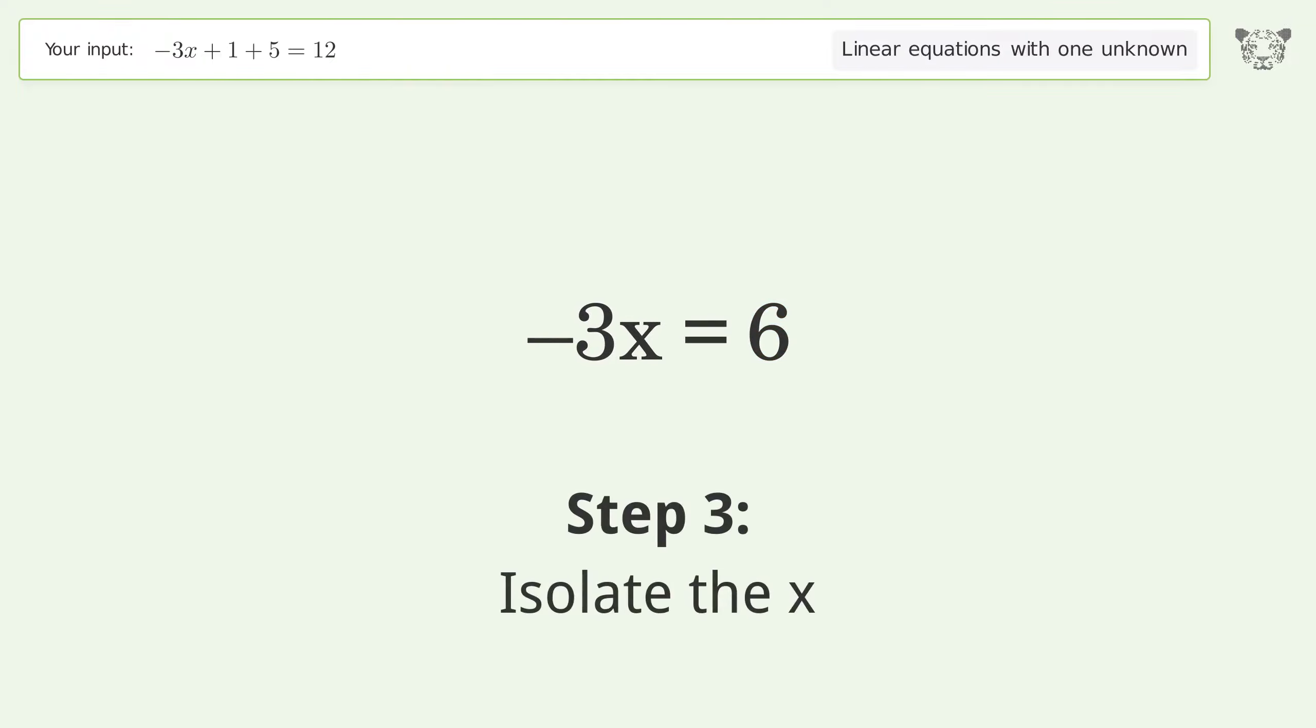Isolate the x. Divide both sides by negative 3. Cancel out the negatives.